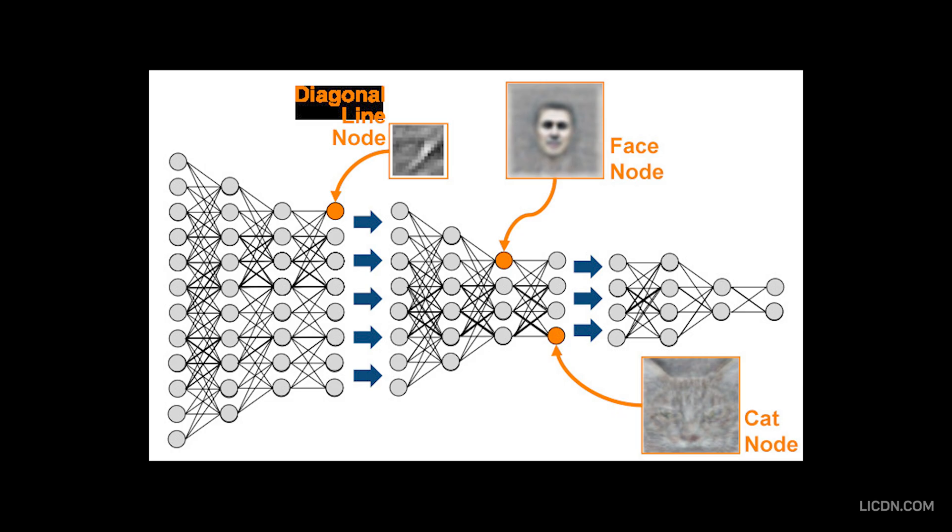In computer vision, early layers might detect edges and colors, middle layers recognize shapes and textures, while deeper layers understand complex concepts like cat or dog.